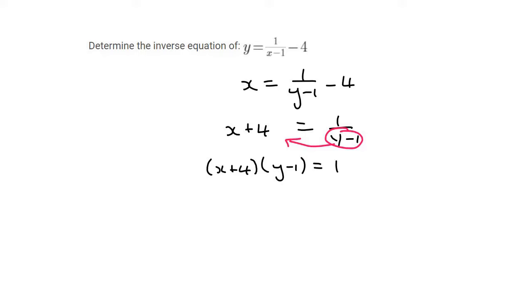You don't want to actually multiply these two brackets together, because now what we can do is we can divide by x plus 4. And so we're going to end up with that.